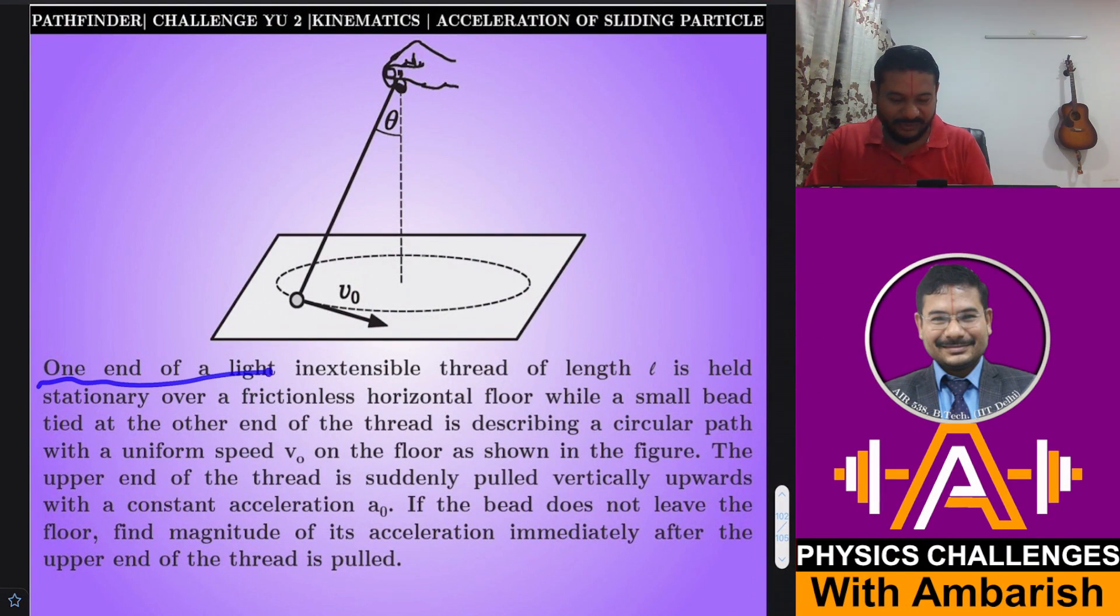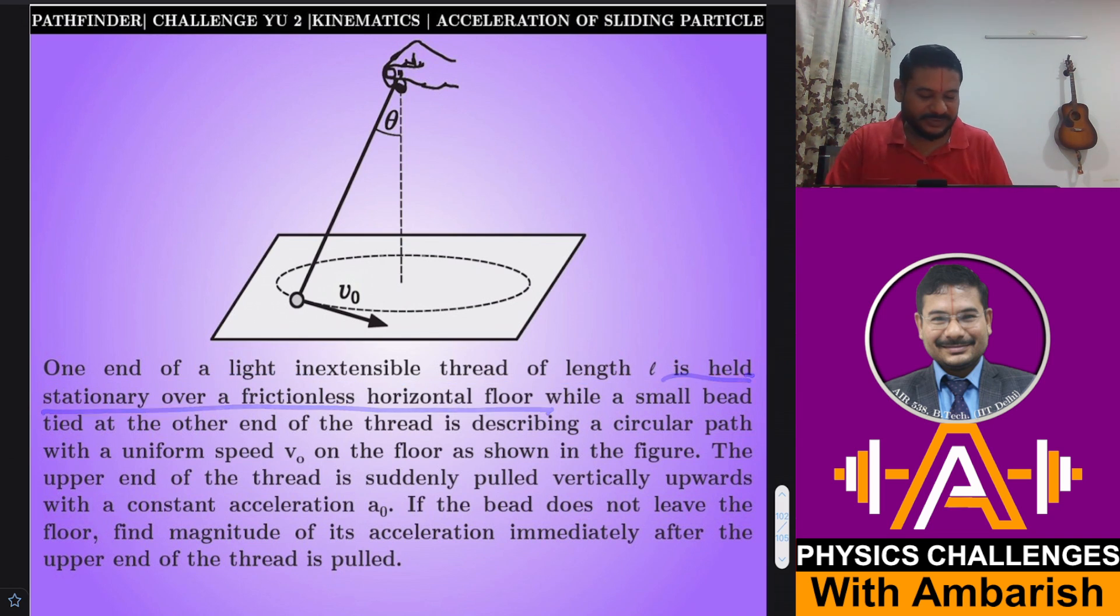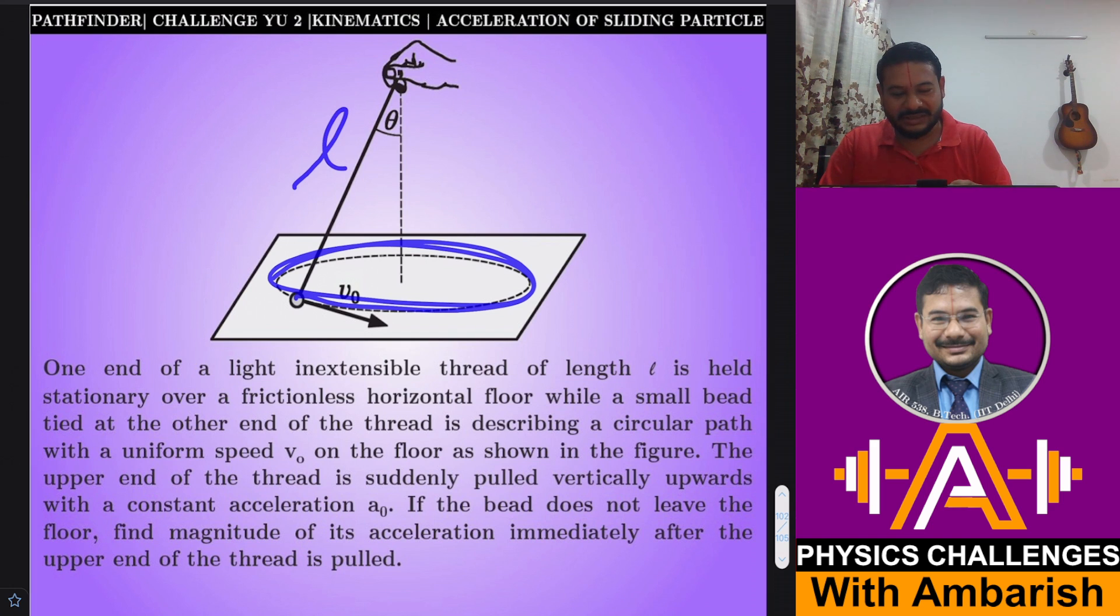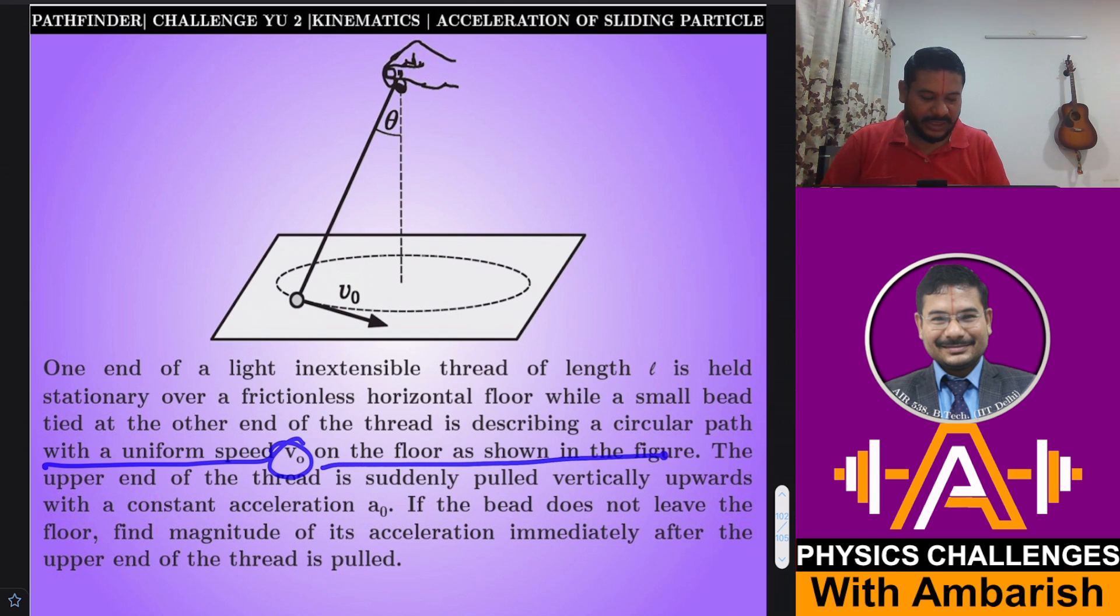One end of a light inextensible thread of length L is held stationary over a frictionless horizontal floor, while a small bead tied at the other end of the thread is describing a circular path. So this is undergoing a circular path and this length is L, with a uniform speed V₀ on the floor as shown in the figure.